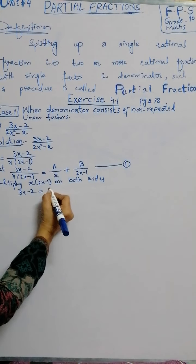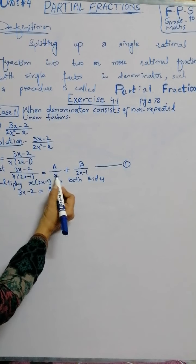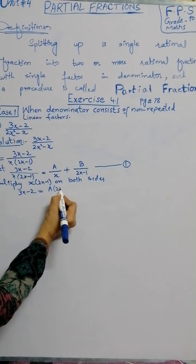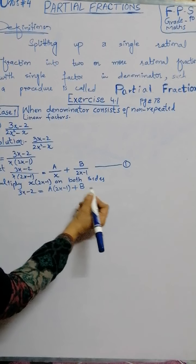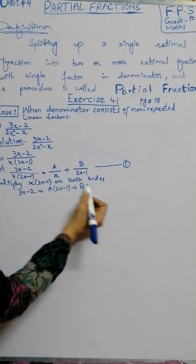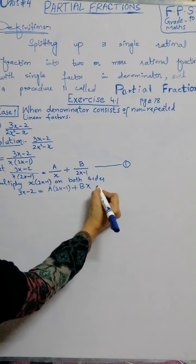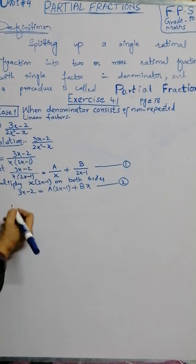It is equal to right hand side: numerator is A. When you multiply this fraction, x cancels, leaving 2x minus 1. Plus numerator B, and by multiplying 2x minus 1, we have only x since 2x minus 1 cancels. This is equation number 2.